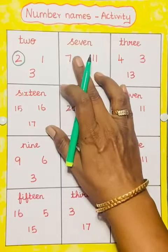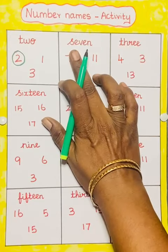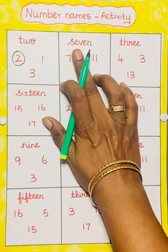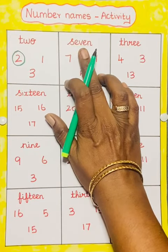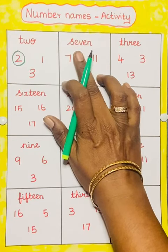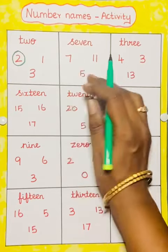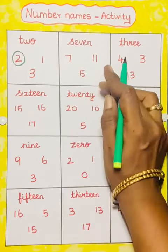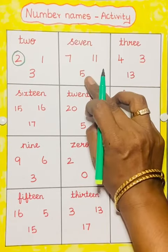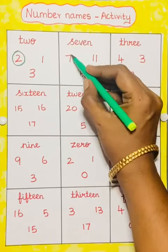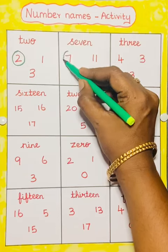Next one: 7. S-E-V-E-N. 7. 7 is 7. So 7 is here, we have to circle it.